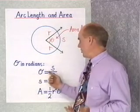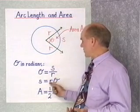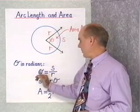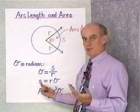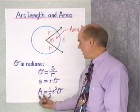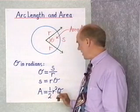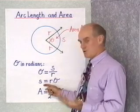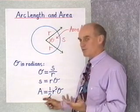The radian measure for θ is the arc length s divided by the radius r. That means the arc length s is going to be r times θ, as long as θ is written in radians. So if I multiply both sides by r, I get s = rθ. This formula allows us to find arc length given the radius and central angle in radians. The area of the sector is one-half r squared times θ, and again θ must be measured in radians. The area of a sector formula is a new formula.